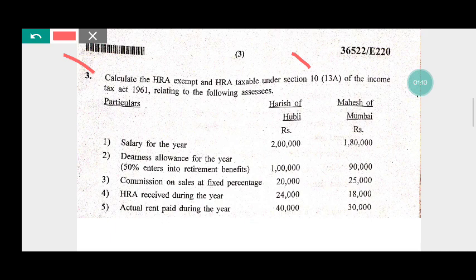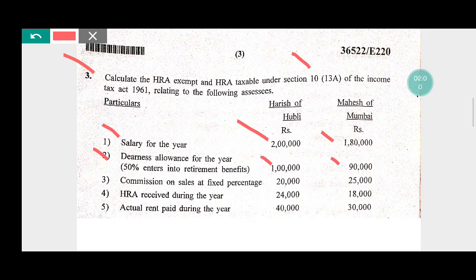They will provide information regarding Harish of Hubbali as well as Mahesh of Mumbai. The salary for the year: Harish is Rs 2,00,000 and Mahesh is Rs 1,80,000. Dearness allowances for the year is 50 percent, entering into retirement benefit of Rs 1,90,000. Actual HRA received during the year: Harish is Rs 24,000 and Mahesh is Rs 18,000.